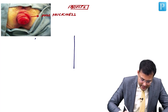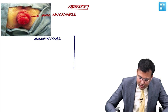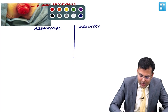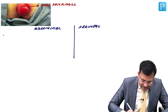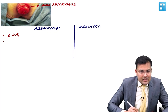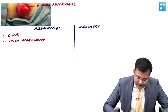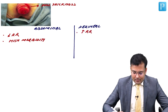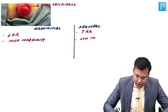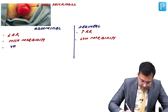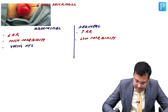In adults, rectopexy can be performed by abdominal approach or perineal approach. The abdominal approach has a low recurrence rate but high morbidity, so it is preferred in young patients. The perineal approach has low morbidity and is preferred in elderly patients.